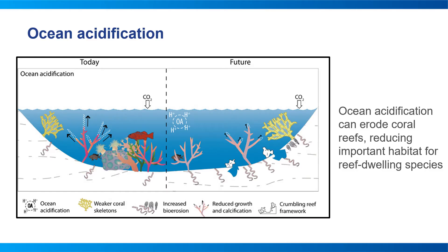Decreases in carbonate ions can make building and maintaining shells and other calcium carbonate structures difficult for calcifying organisms like oysters, clams, sea urchins, shallow water corals, deep sea corals, and even plankton. Many people depend on fish and shellfish as a primary source of protein, income, and livelihoods. As ocean acidification increases globally, certain places with coral reefs will be more impacted.